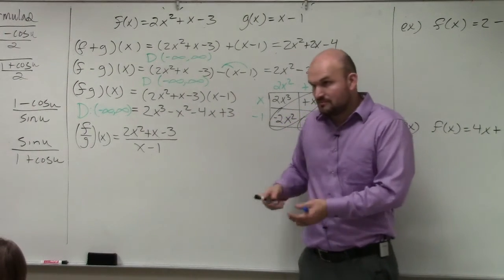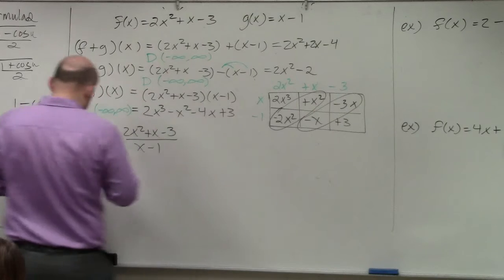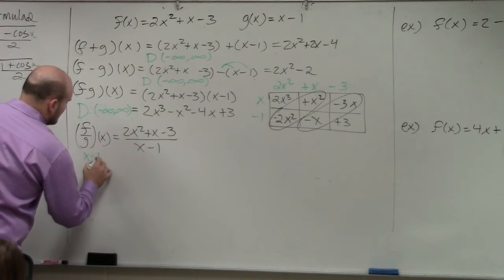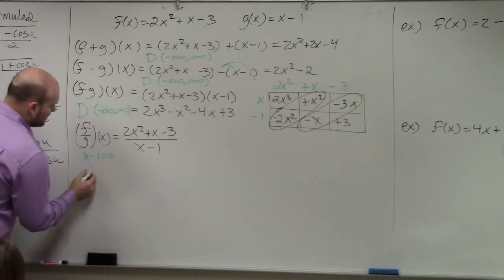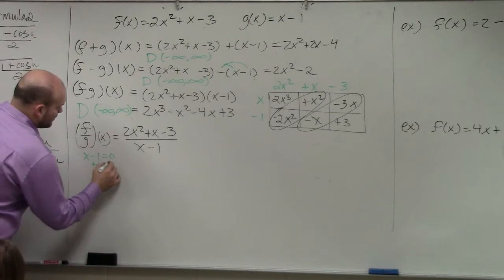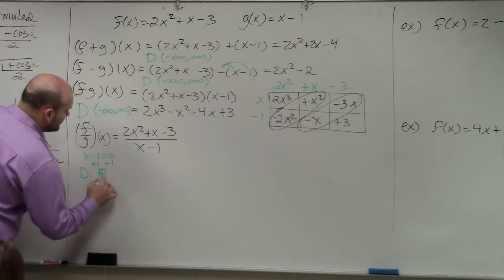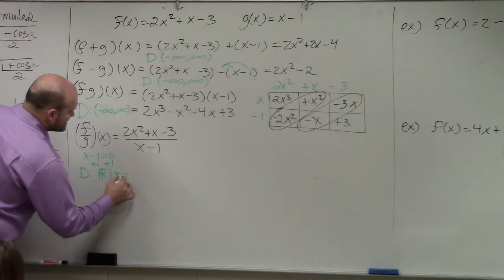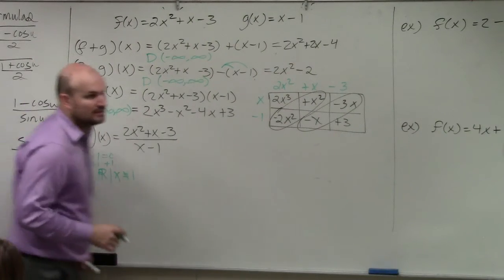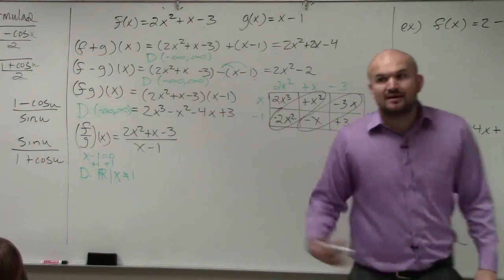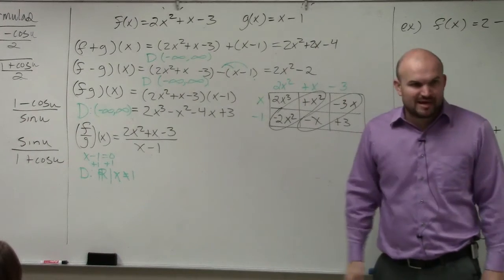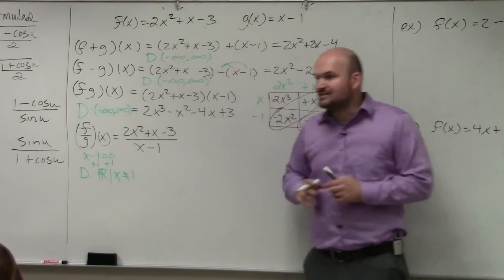1, right? Because all you simply do is set your denominator equal to 0. And therefore, my domain is going to be all real numbers such that x cannot equal 1. So before I even get into simplifying, I can easily identify my domain because I know I can't have a 0 in my denominator.